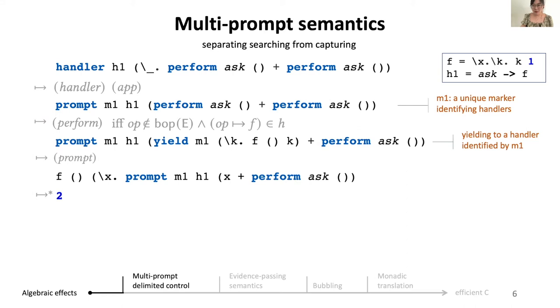At first sight, going through multi-prompt semantics does not seem to buy as much, because the overall process is still the same. However, now we separated searching from capturing and it opens up the way for optimizing each part individually, which we will do with evidence passing and bubbling.